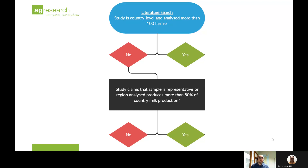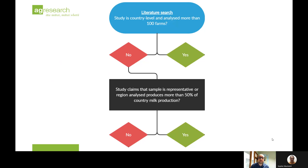If a study was regional rather than national, we checked whether that region represented a good proportion of the country's milk production. For example, we had studies in Italy with less than 100 farms, but the region studied represented almost 75 to 80% of the country's milk production. So we decided to include those studies.